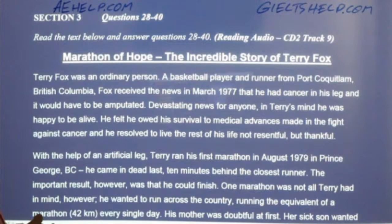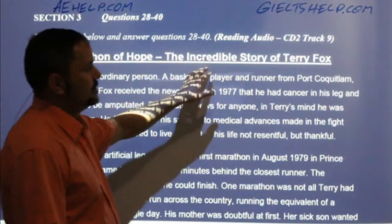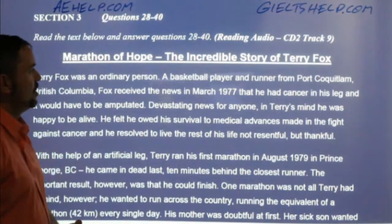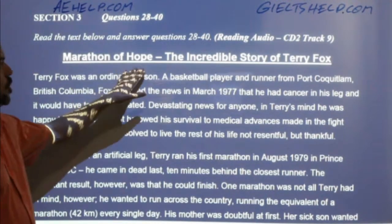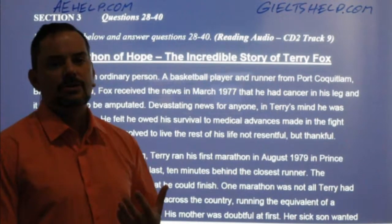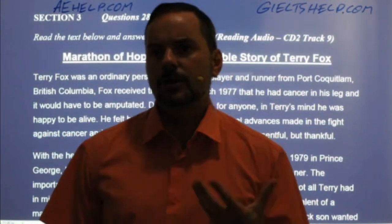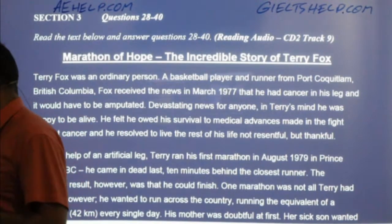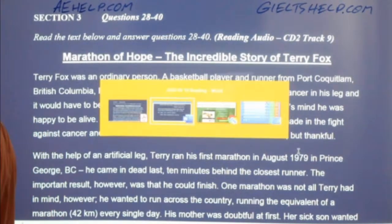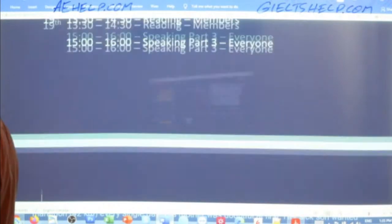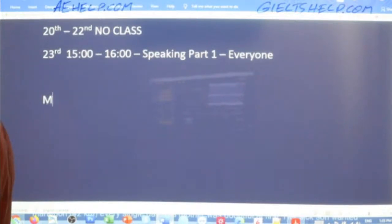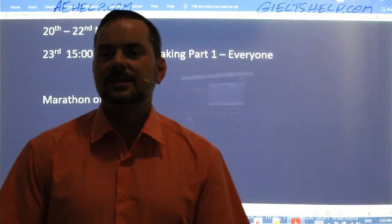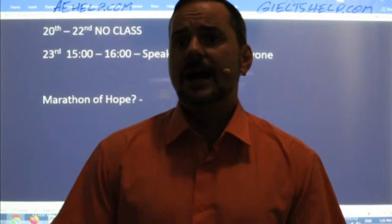Let's take a look at this title: 'Marathon of Hope: The Incredible Story of Terry Fox.' What kind of information can we predict from this title? What does 'marathon of hope' mean? A marathon is a long-distance run — I believe 42.5 kilometers — and big cities host famous marathon runs: the New York Marathon, Chicago Marathon, Toronto Marathon, Budapest Marathon. So 'hope' added to 'marathon' suggests running for some kind of goal or dream. Carolina says it's probably an incredible story about a man who overcomes adversity.